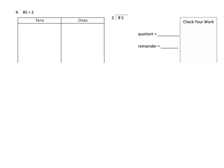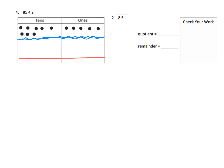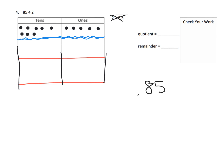Now we have 85 divided by 2. First we model 85: 1, 2, 3, 4, 5, 6, 7, 8 — there's 80 — and then 1, 2, 3, 4, 5 ones. So there's our 85. I'll draw a line to show where we'll be doing our division, and here are our two groups. Why two groups? Because it says divide by 2. So: 85 divided by 2.